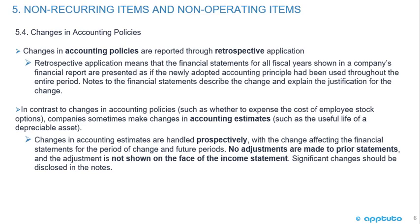Changes in accounting policies are reported through retrospective application, meaning you need to restate previous years' financial results using the new policy. The financial statements for all fiscal years shown in a company's financial report are presented as if the newly adopted accounting principle had been used throughout the entire period. Notes to the financial statements describe the change and explain the justification. In contrast, companies sometimes make changes in accounting estimates, such as the useful life of a depreciable asset or the salvage value.